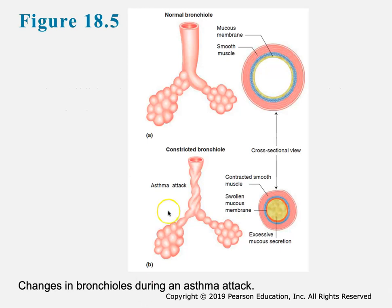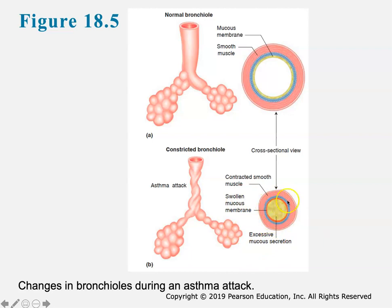If you look at the changes in the bronchi during an asthma attack - here's normal, and here's what's happening during an attack. You can see that those airways are severely constricted - there's a swollen mucus membrane, lots of mucus secreted, and contracted smooth muscle that basically squeezes those airways.